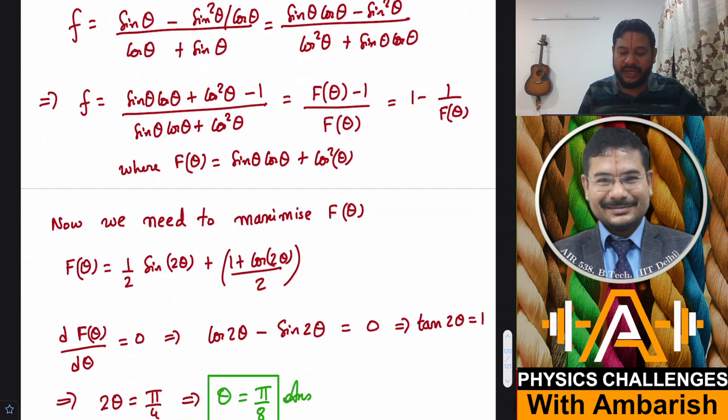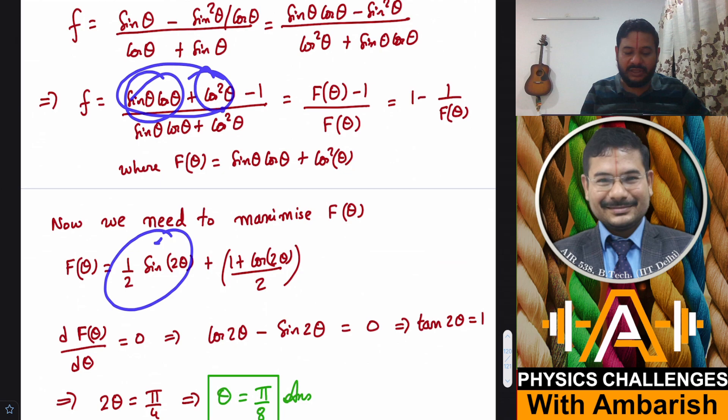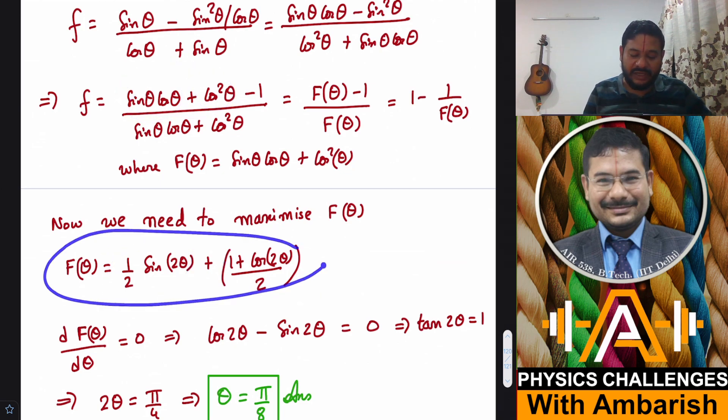Now I am writing capital F of theta as this one. This, if you see carefully, is sine 2 theta upon 2, and this one is 1 plus cos 2 theta upon 2. Derivative of F theta, I make it 0, so that gives you this derivative will become cos 2 theta and this derivative will become minus sine 2 theta.